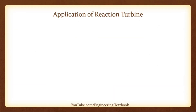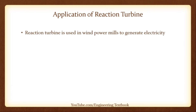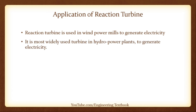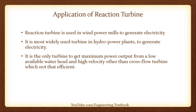Applications of Reaction Turbines. Reaction turbines are used in wind power mills to generate electricity. They are the most widely used turbines in hydropower plants. They are the only turbines capable of achieving maximum power output from a low available water head and high velocity, other than cross-flow turbines, which are not as efficient.